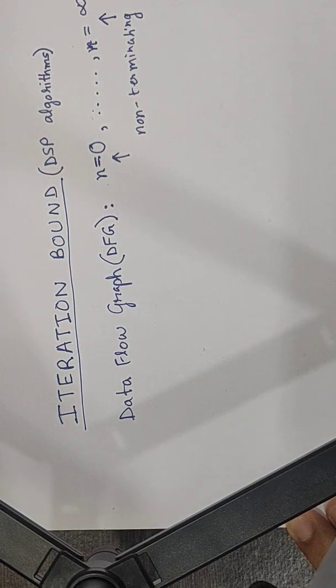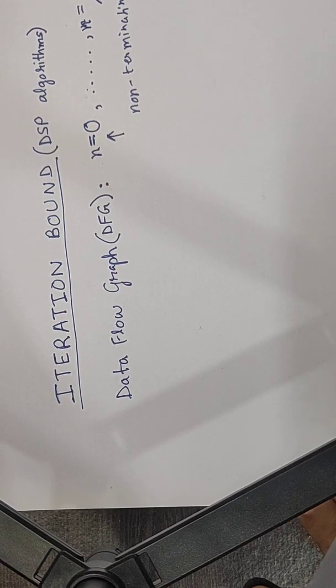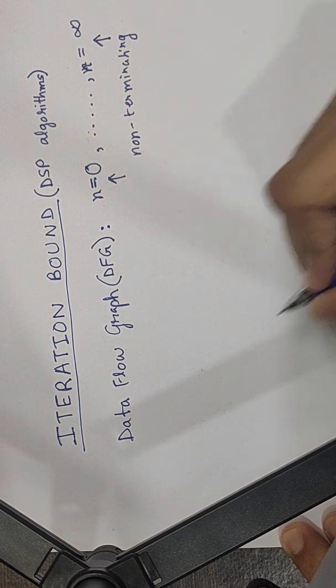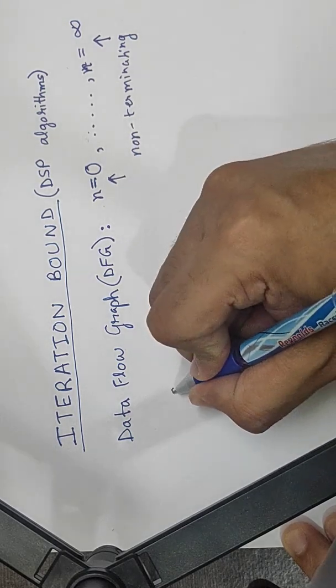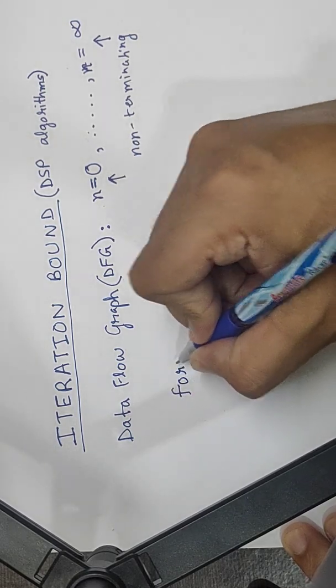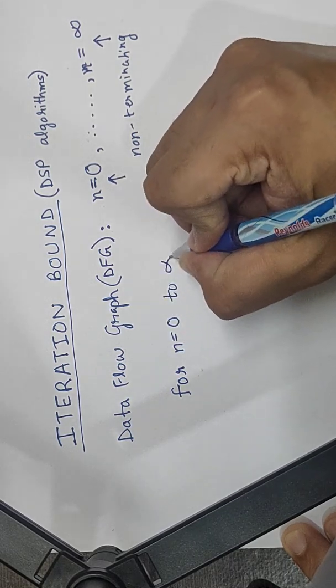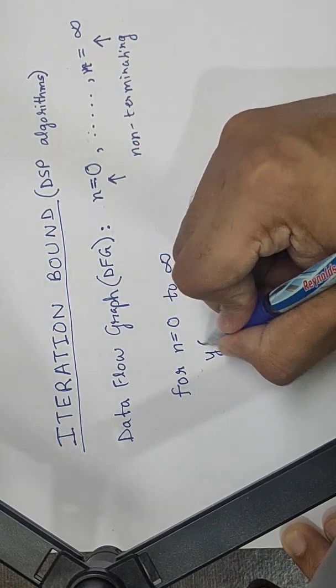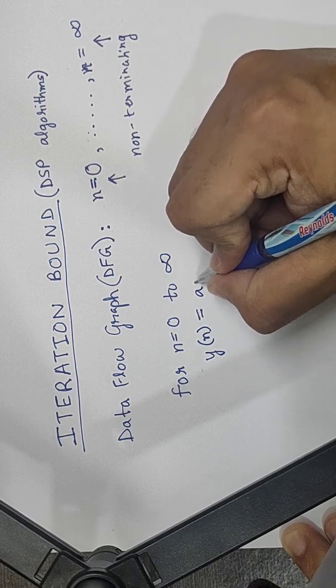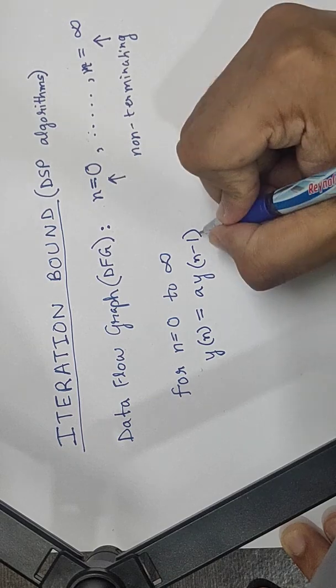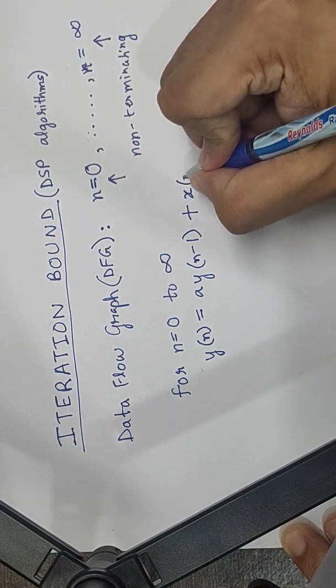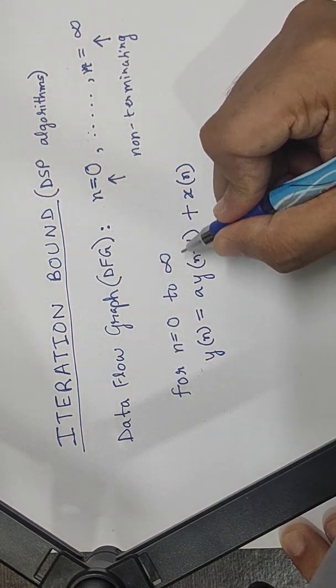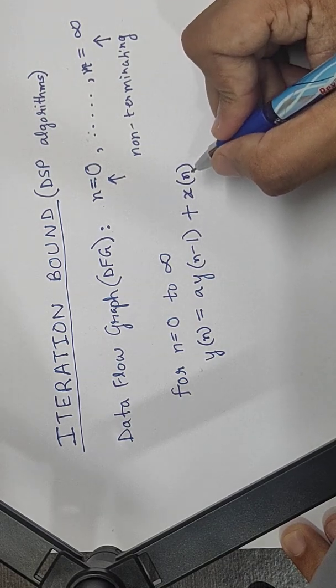This is a pretty important thing. Now we'll define the data flow graph representation of the algorithm and for that we'll start with an example. For n equals zero to infinity, y of n equals a times y n minus one plus x of n, where a is a constant. I have an addition operator and one of the samples is from the previous iteration n minus one and one sample is from the present iteration n.